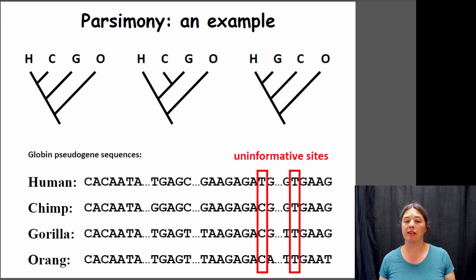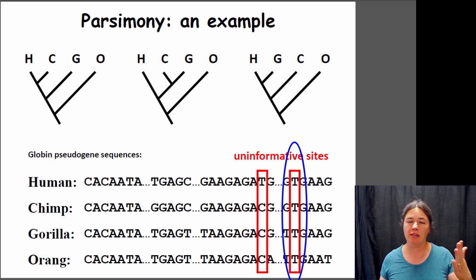Here's a couple of sites that we might look at. Let's start by looking at this site here that is all T's. Does this tell you anything about the relationships between the different organisms in this group? They all have a T; it doesn't tell you which one's more closely related to which other one, so that doesn't really help us.